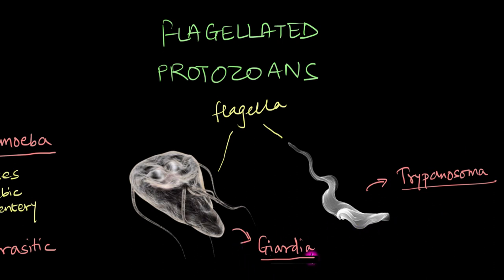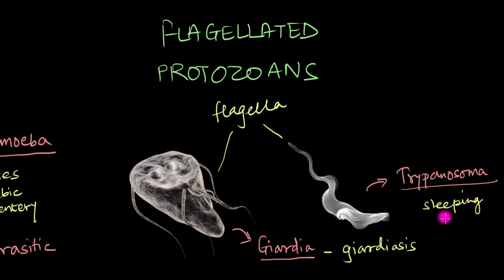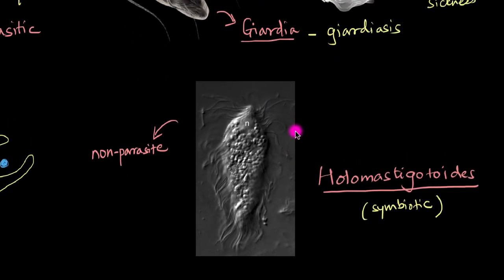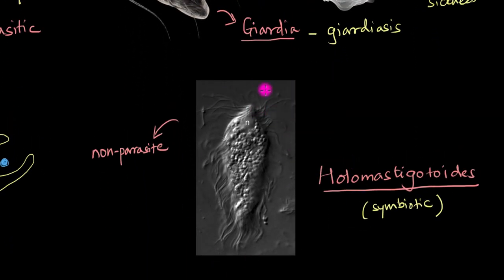Giardia causes something called giardiasis, which is a form of diarrhea, and tripanosoma causes the disease sleeping sickness. Non-parasitic flagellates include the symbiotic holomastegotoitis, which has numerous flagella all around it. This flagellated protozoan is symbiotic in nature and is found in the guts of termites.